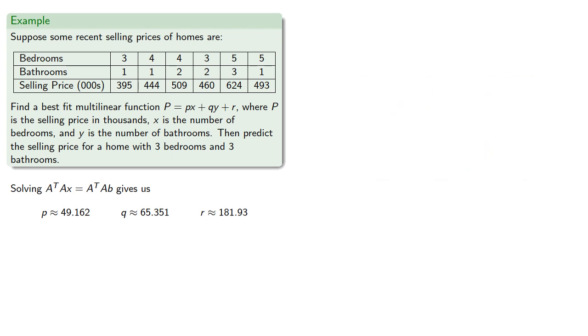So let's use it to make a prediction. If we have a house with 3 bedrooms and 3 bathrooms, the formula predicts a selling price of about $525,000.